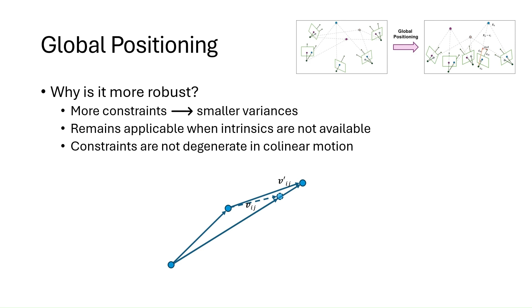Compared to previous global methods, including all camera-point correspondences increases the number of constraints, thus reducing the variance in the estimation. Furthermore, relative translations are generally less accurate than image rays, especially when camera intrinsics are not accurate. The problem can also become degenerate when cameras are subject to collinear motions. Afterward, rounds of bundle adjustments are performed to improve the accuracy of the estimation.